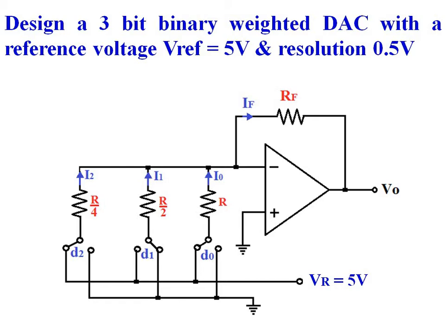When an input bit is equal to 0, the SPDT switch of the corresponding input is connected to ground. And when an input is equal to 1, the SPDT switch of that input is connected to the reference voltage of plus 5V.